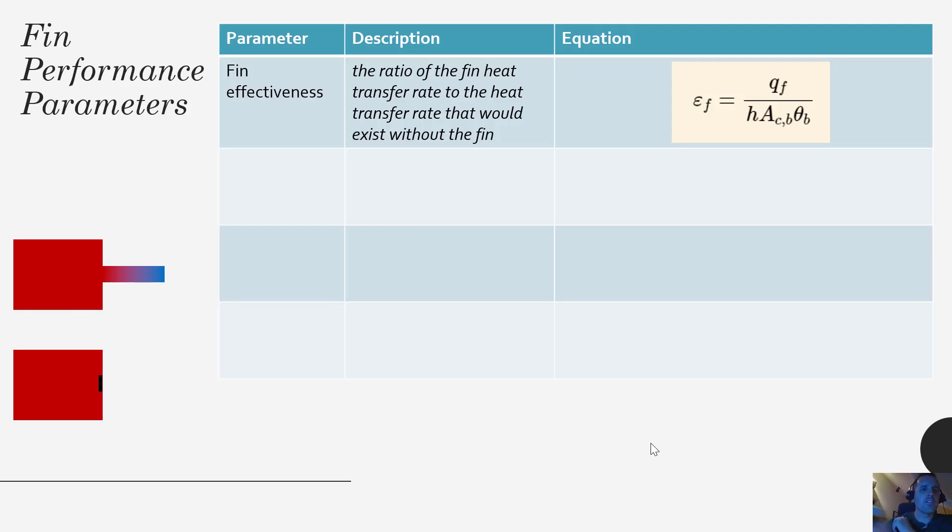So the first performance parameter is called the fin effectiveness and that is basically the ratio of the fin heat transfer rate to the heat transfer rate that would exist without the fin. So you can see in the drawing here, here is our fin. So we would quantify how much heat does that fin dissipate.